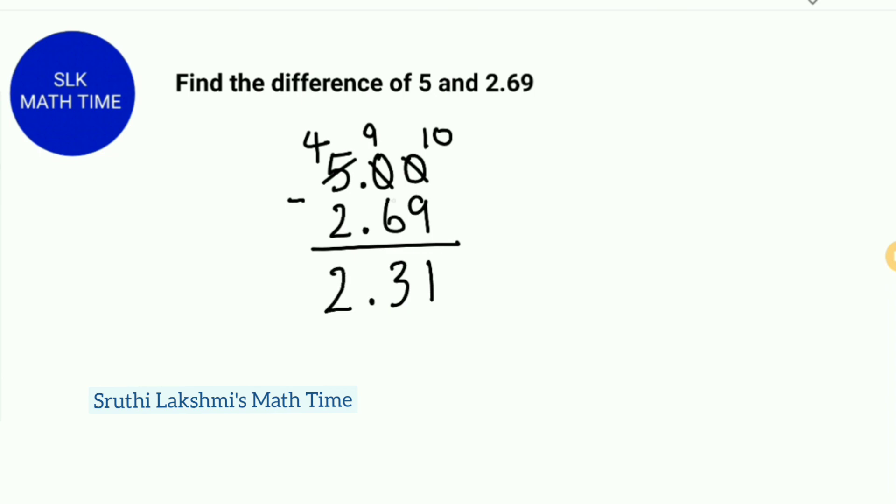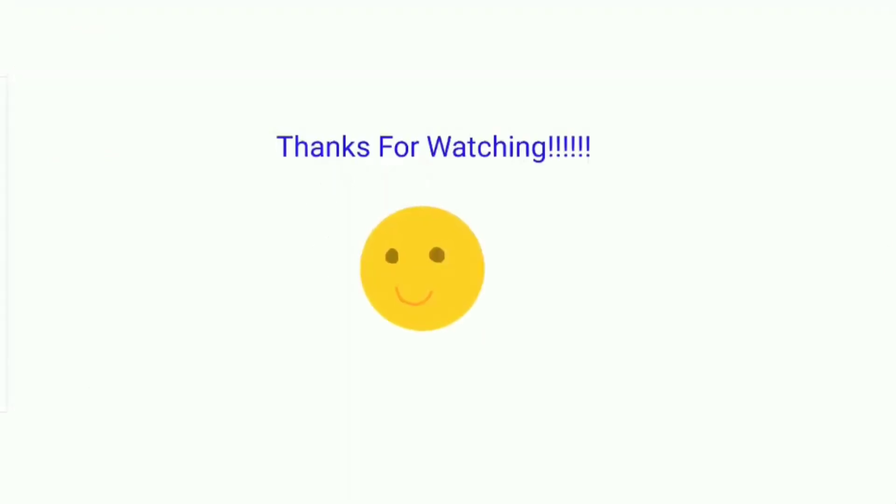So 5 minus 2.69 is 2.31. Thanks for watching.